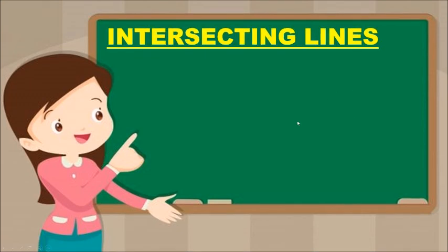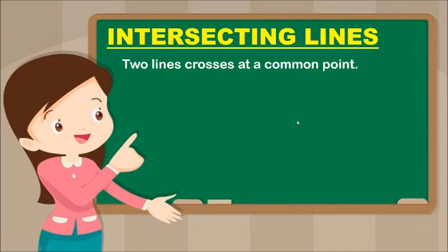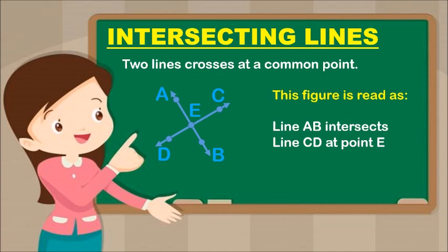Next is Intersecting Lines. Two lines that cross at a common point — that is an Intersecting Line. The common point is E. This figure is read as: Line AB intersects Line CD at Point E.